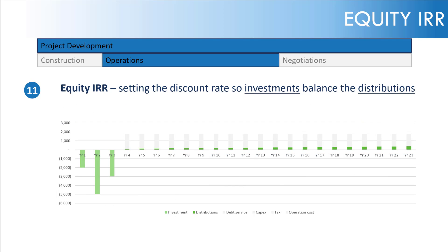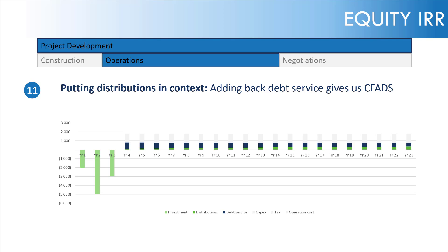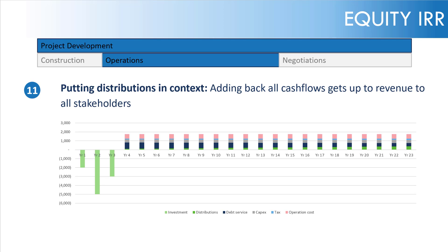In terms of equity IRR concepts, we are essentially setting the discount rate so that the investments balance the distributions — the three green bars at the start being the investments, and the other green bars being the distributions. As we increase the discount rate, cash flows further away tend to decrease, affecting the balance of distributions, while cash flows closer to us now get less affected. Adding back the debt service gives us CFADS, and adding back all cash flows — capex, tax, and operating costs — builds us back up to revenue to all stakeholders.